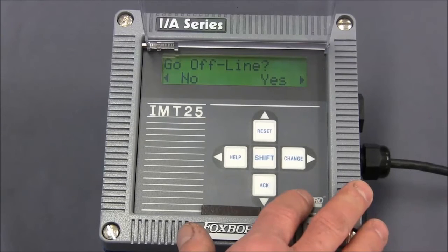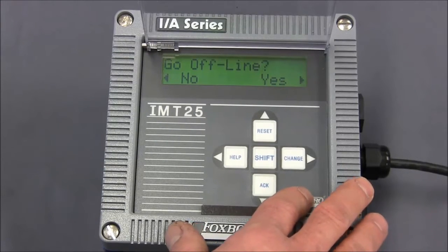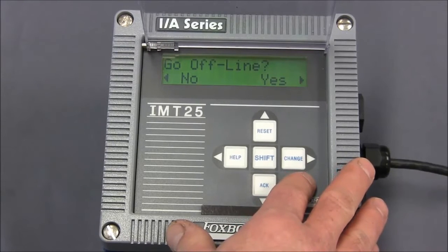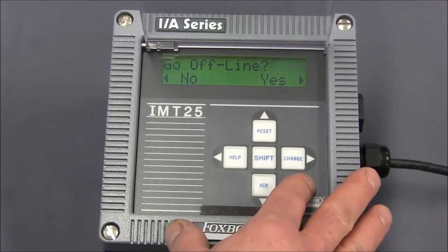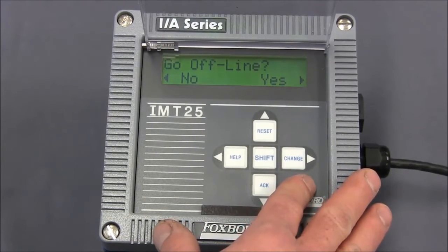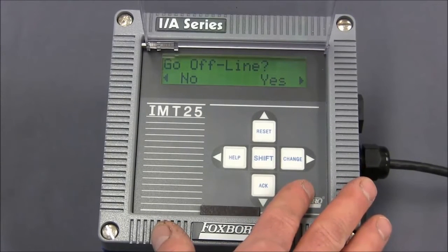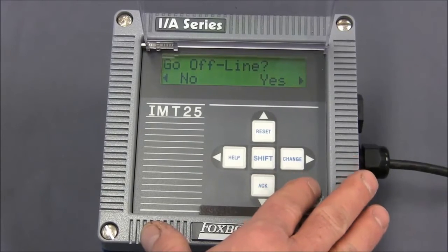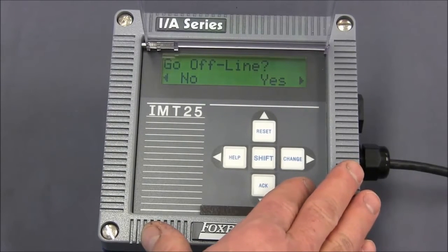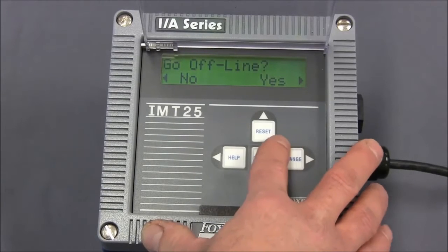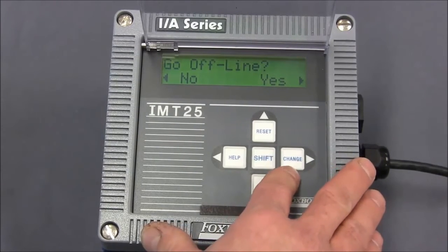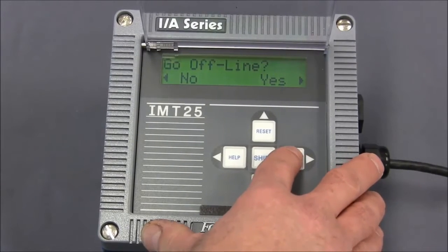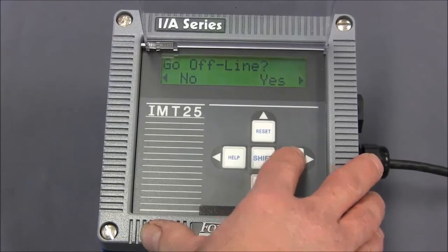When you do that correctly the first time, it'll say go offline. What that means is if you're in a control loop, the control loop should be switched into manual before you continue. Because now, once we say yes, the transmitter will output four milliamps regardless of the flow value. So we're going to hit the right arrow key or the change key to say yes, it's okay to go offline.